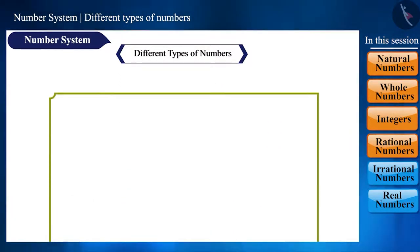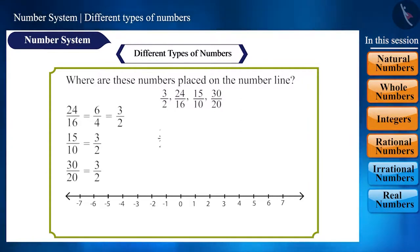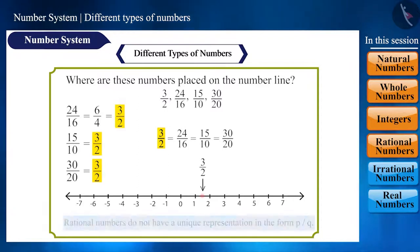Friends, can you tell me, where will all these different numbers 3 by 2, 24 by 16, 15 by 10, 30 by 20 be placed on the number line? Even though these numbers are different, their value remains 3 by 2, which will be located here on the number line.